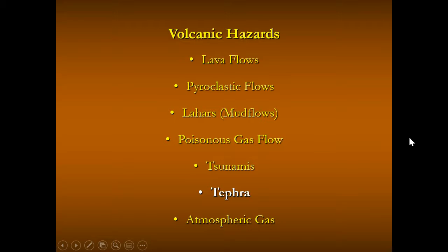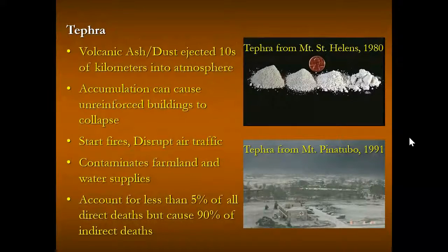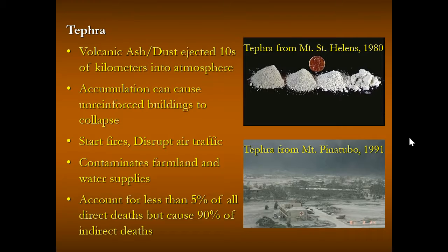Tephra is the name for the smallest particles from volcanic eruptions — things like volcanic ash and dust — which can be ejected tens of kilometers into the atmosphere. You can see the size of tephra from Mount St. Helens compared to a penny. Tephra blocking the skies from Mount Pinatubo in 1991 is also pictured. It can accumulate on unreinforced buildings and make them collapse, essentially like snow made of rock — very dense and heavy on rooftops.